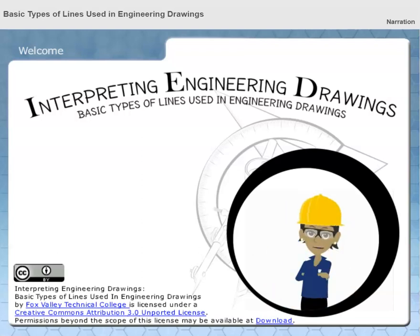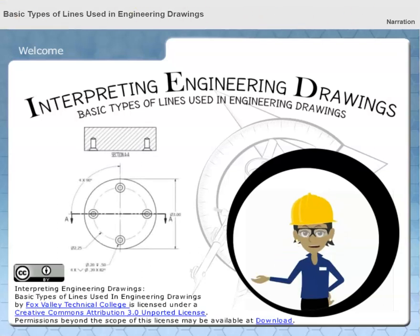Welcome to Basic Types of Lines Used in Engineering Drawings. My name is Lucy. An engineering drawing or print is used as a communication tool between engineering and manufacturing.